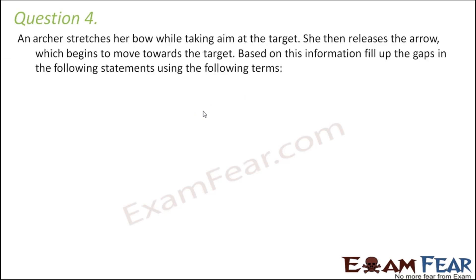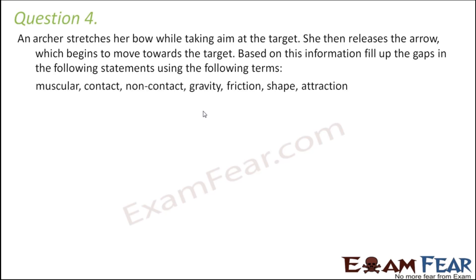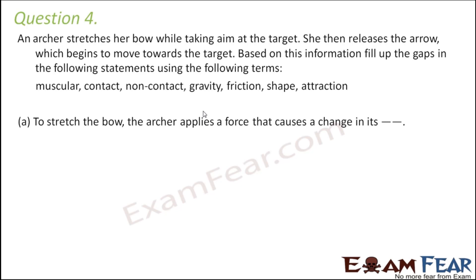Question number four: an archer stretches her bow while taking aim at a target, then releases the arrow which begins to move towards the target. Fill up the gaps using the given terms. The first blank: 'To stretch the bow, the archer applies a force that causes a change in it.' When the person stretches the bow, the shape of the bow is changing, so it is causing a change in shape.